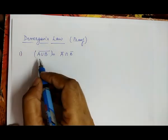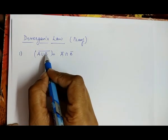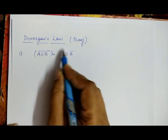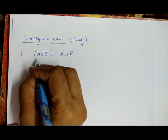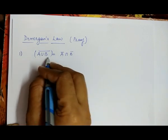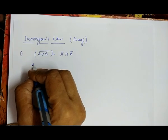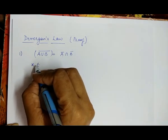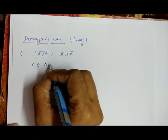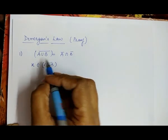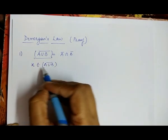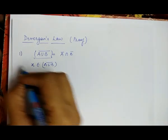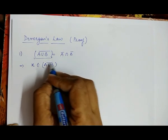First we take the left hand side, and then with the help of the left hand side we can derive the right hand side. The first step to solve this: for A union B whole complement, we take an element X which belongs to A union B whole complement.